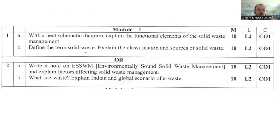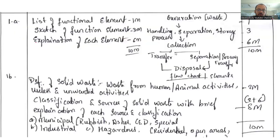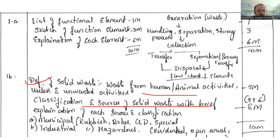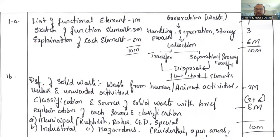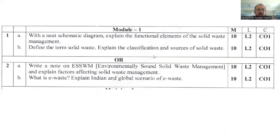Question 1b asks you to define the term 'solid waste' and explain the classification or source of solid waste. The definition: waste which is in the state of solid is generally called solid waste. You can classify it using type-based classification and source-based classification; here they have asked for source-based classification. Total weightage is 10 marks. Focus on the specific points and do not deviate from the topic — writing blindly without key points will not earn marks.